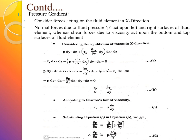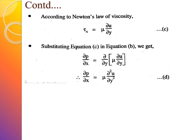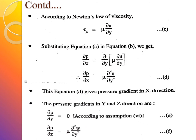According to Newton's law of viscosity, the shear stress τx = μ·∂u/∂y, where μ is the coefficient of viscosity and ∂u/∂y is the velocity gradient. Substituting this into the equilibrium equation, we get the pressure gradient in the x-direction: ∂p/∂x = ∂(μ·∂u/∂y)/∂y, which simplifies to ∂p/∂x = μ·∂²u/∂y². This equation gives the pressure gradient in the x-direction.